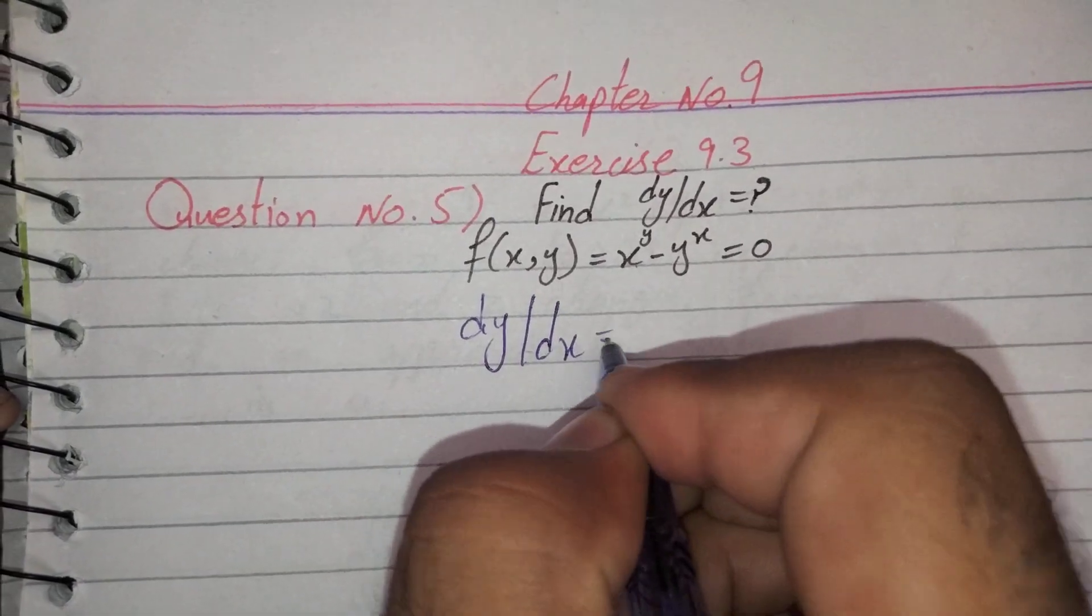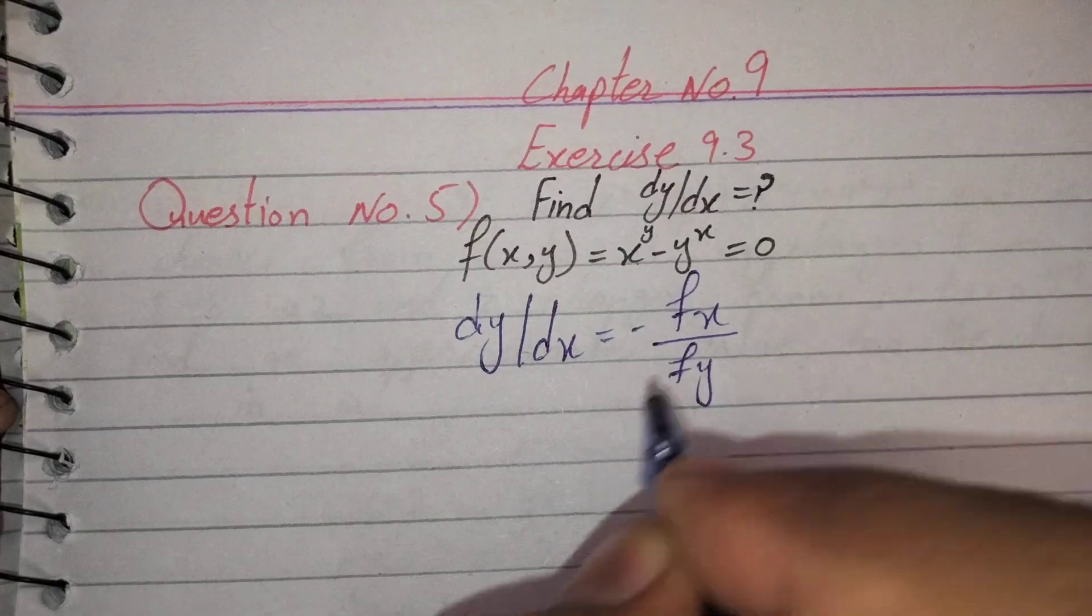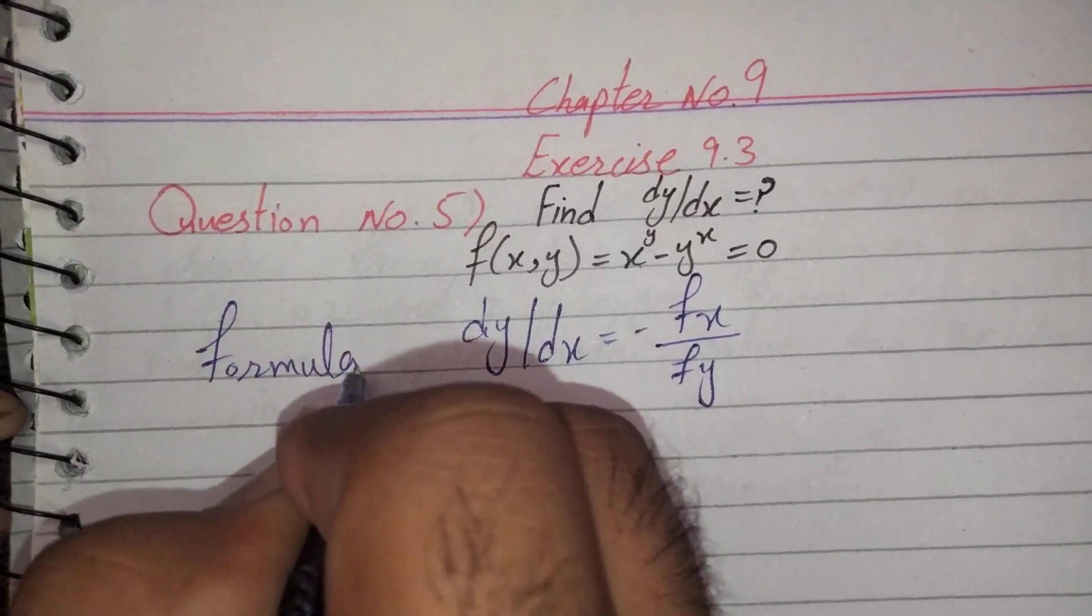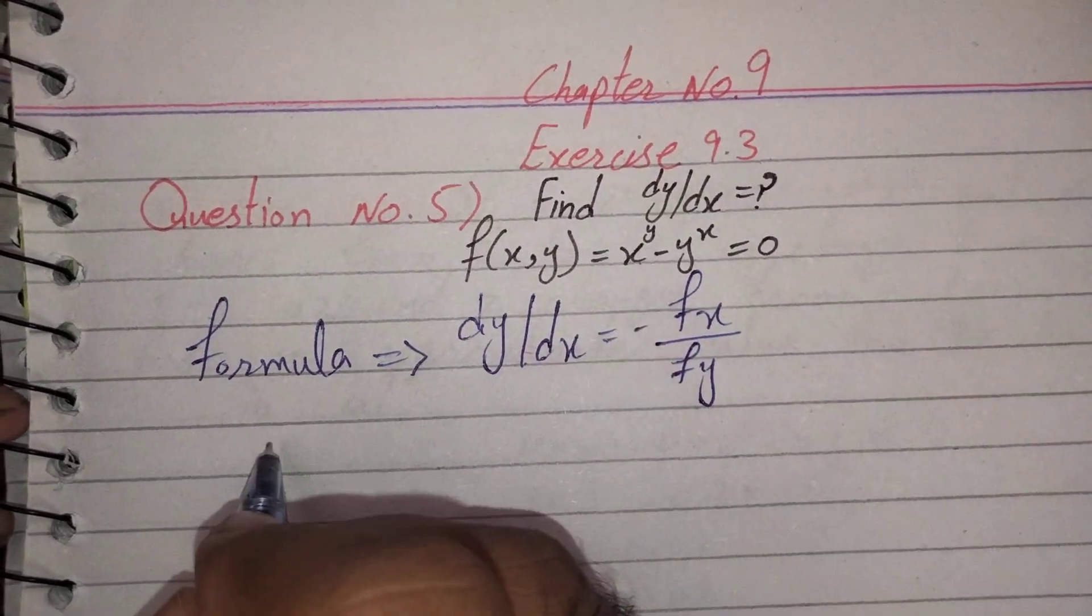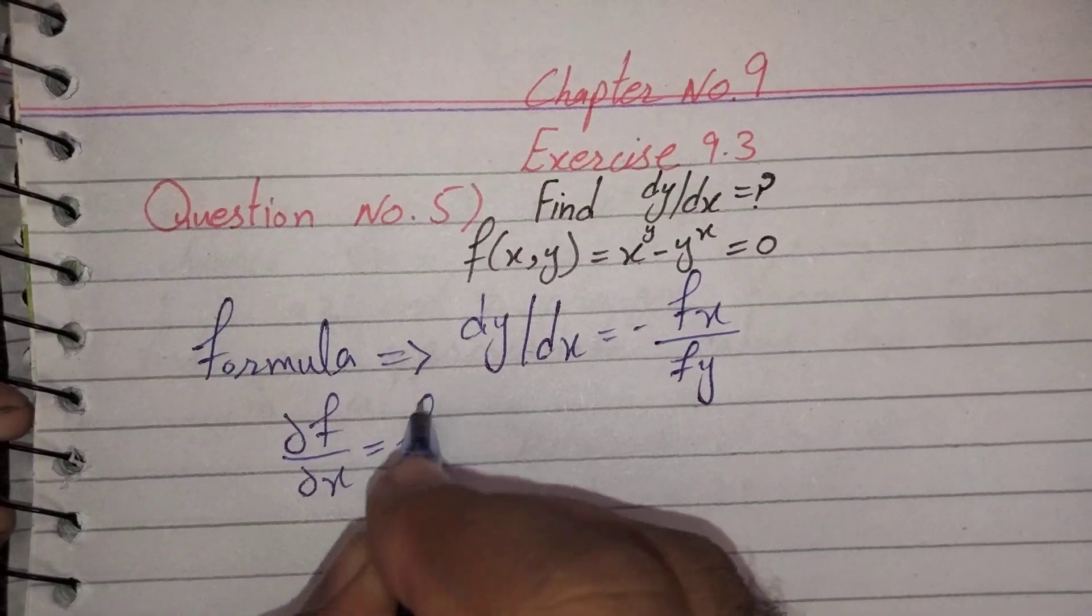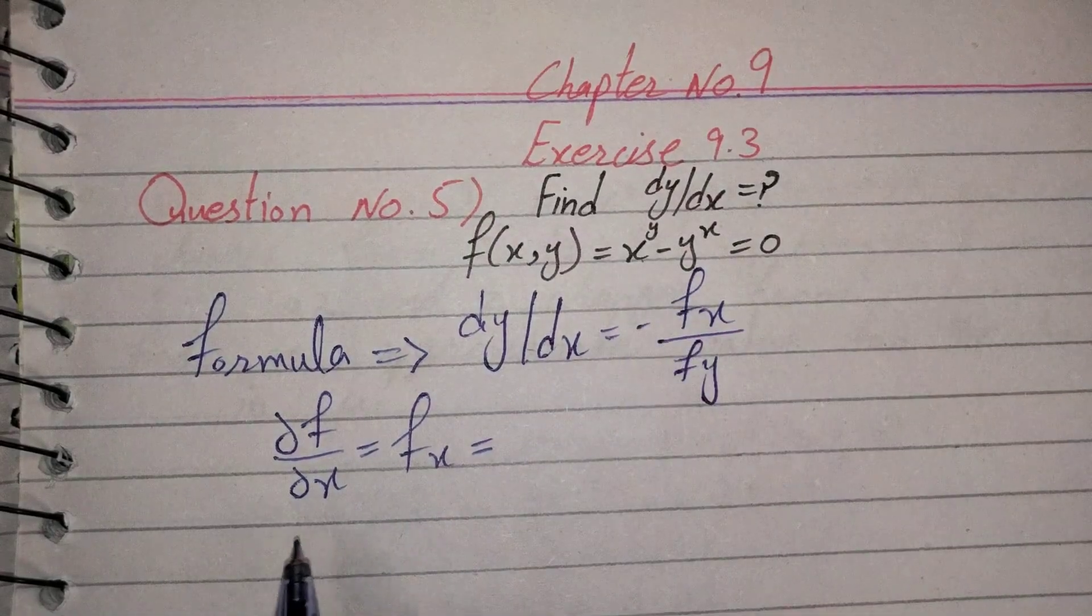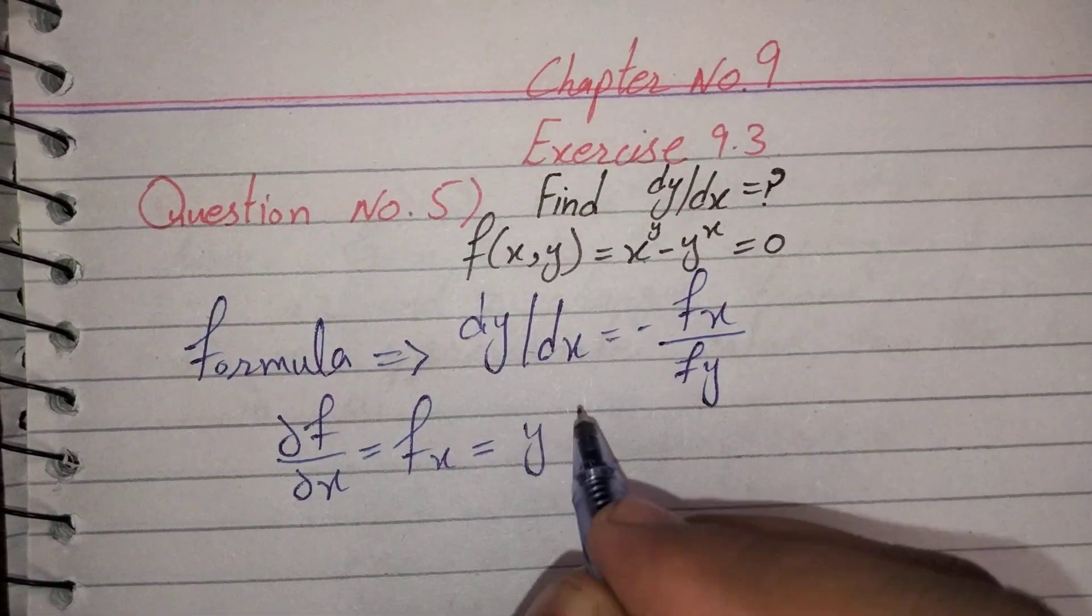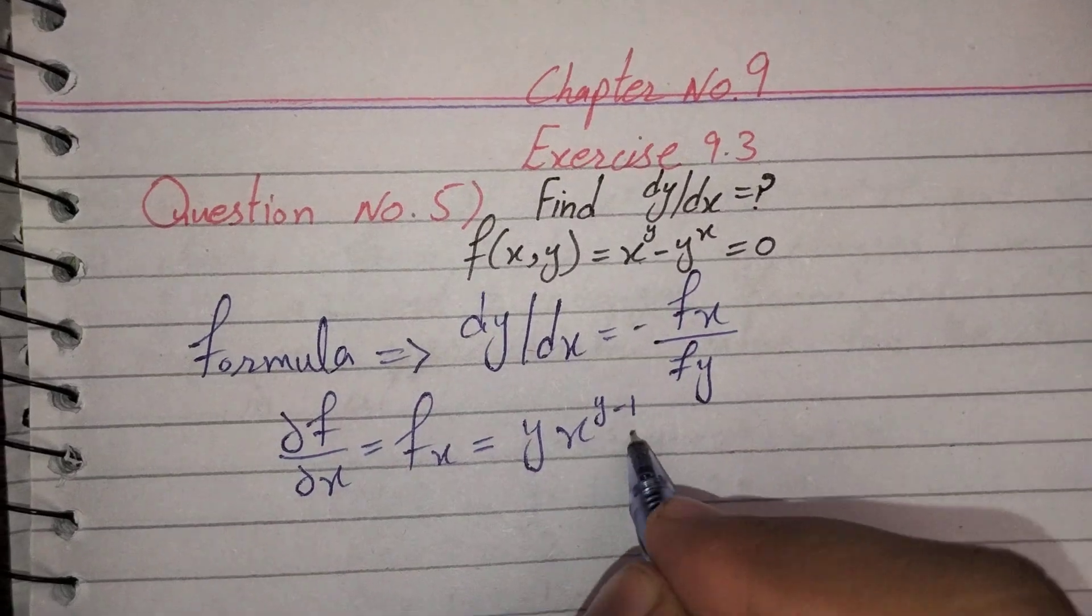dy/dx is equal to minus fx over fy. This is our formula. So first, we will find partial f over partial x, which equals fx. When we take the partial derivative of this function with respect to x, the power will come down, we'll subtract one from the power.